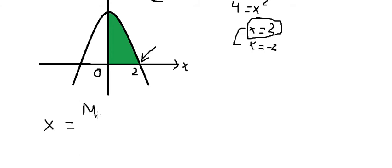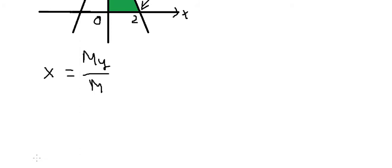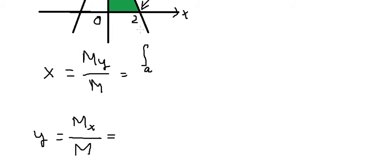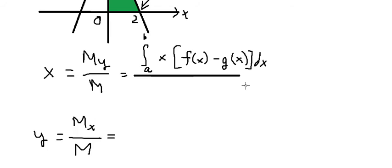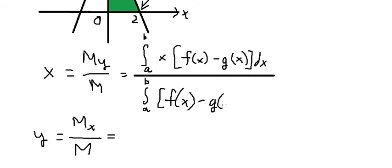Now the formula to find the center of mass: x-bar equals M_y over M, and y-bar equals M_x over M. For x-bar, the numerator is the integral from a to b of x times [f(x) minus g(x)] dx, divided by the integral from a to b of [f(x) minus g(x)] dx.